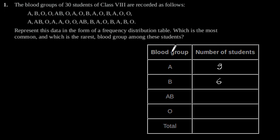The number of students having blood group AB is 3, and the number having blood group O is 12, which gives a total of 30 students.